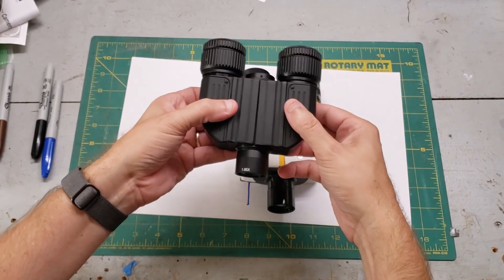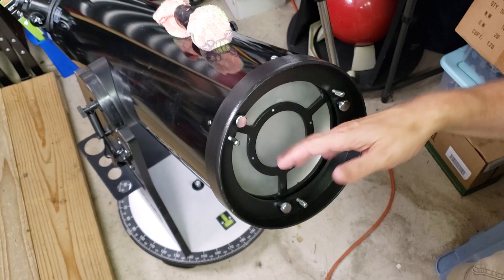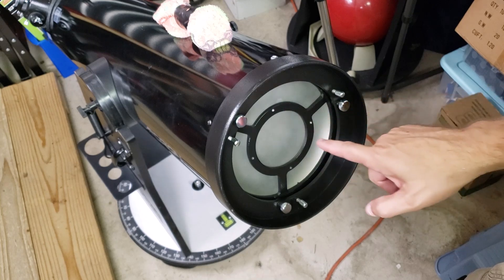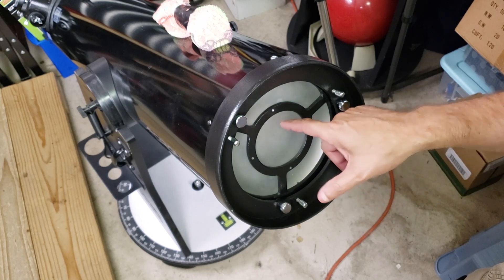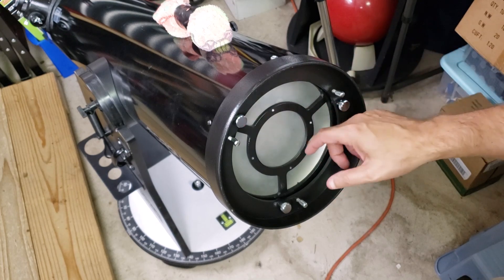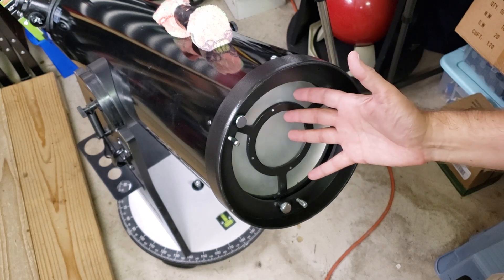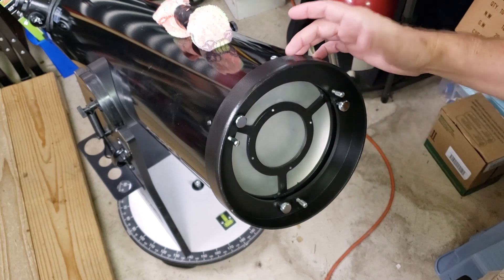The most drastic is to move your primary mirror forward several inches to eat up that extra required focus distance. This is complicated and requires modifying your mirror cell. And from that point on, you have a very special purpose telescope that will require using a bino viewer.